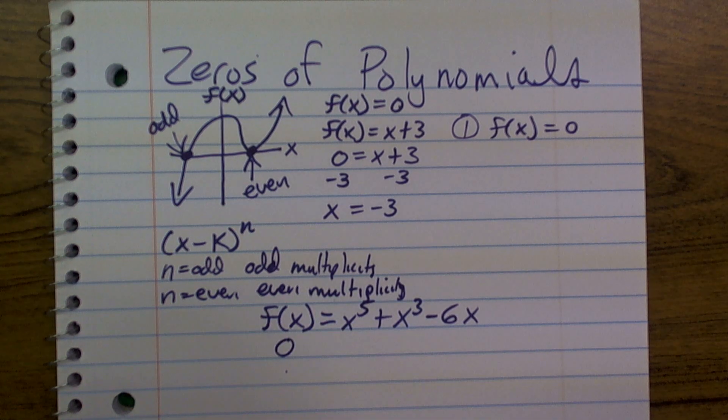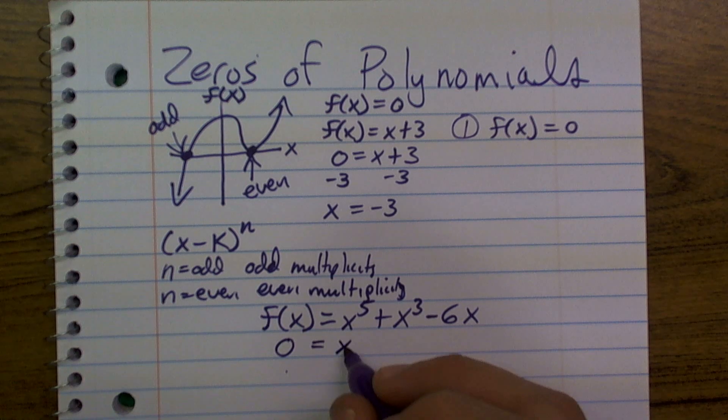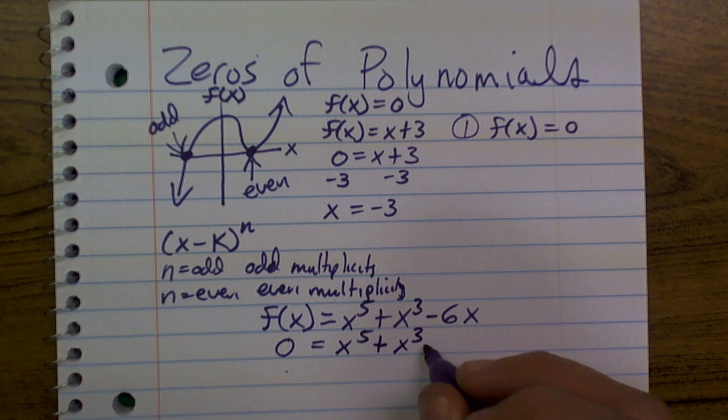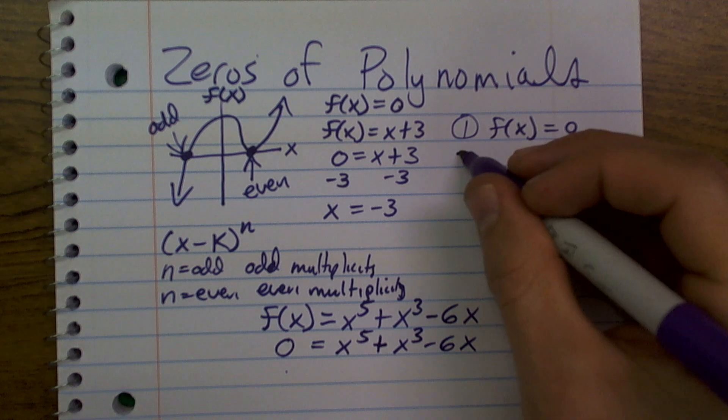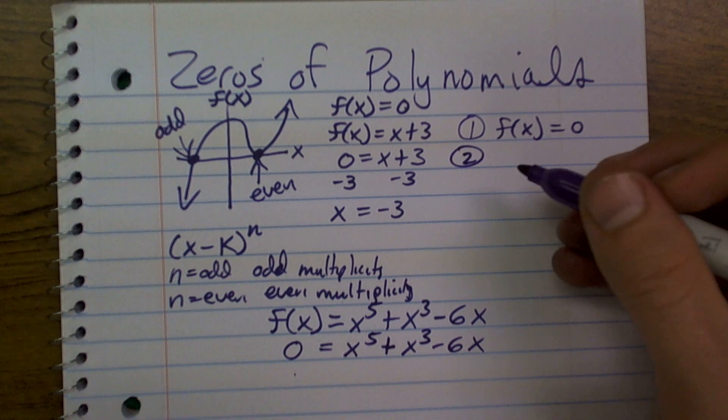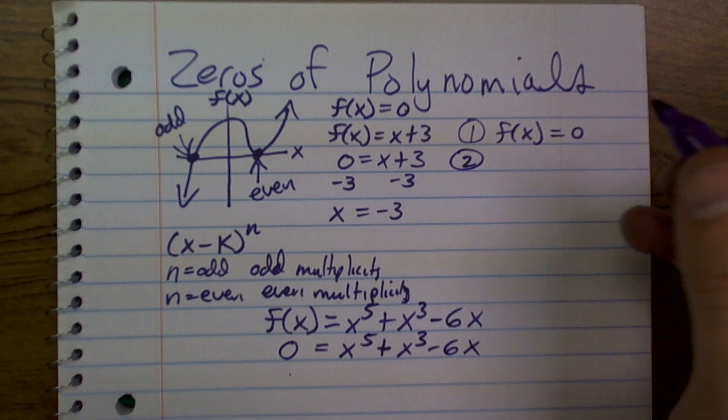So, we have f of x equals x to the fifth plus x third minus 6x. So, the first thing I'm going to do, I'm going to put zero in for f of x, and then say it's going to be x to the fifth plus x cubed minus 6x. Now, the second thing you always want to do is try to factor out any GCF or any common terms.